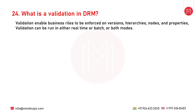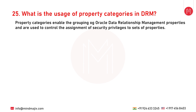The next question is: what is a validation in DRM? Validations enable business rules to be enforced on versions, hierarchies, nodes, and properties. Validations can be run either real-time, batched, or in both modes. Real-time validations are run at the time of modification and prevent changes from being saved if the action would violate the enforced rules. Batch validations can be explicitly run before or after edits are made to identify data conditions that are invalid and need to be addressed.